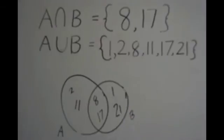When we have A union with B, denoted by a curved U shape, we take every part that belongs to either and both sets, so the elements will be 1, 2, 8, 11, 17, and 21.